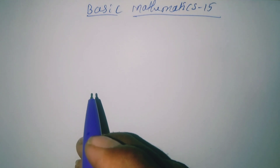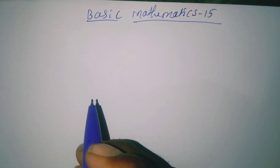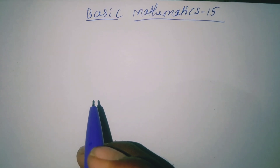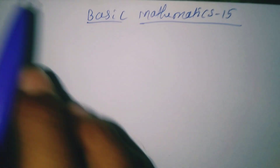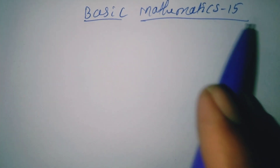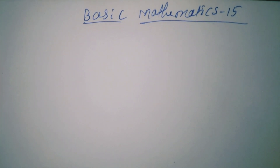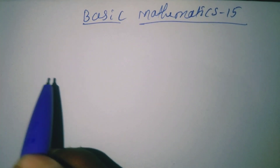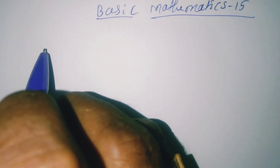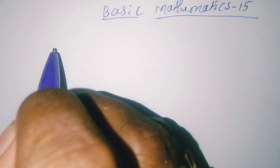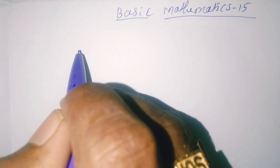Hello, my dear students. Welcome to my lecture. Today's session is about Basic Mathematics Part 15. In Part 14, we studied types of triangles and types of quadrilaterals. Today we will do a short revision of all the properties.